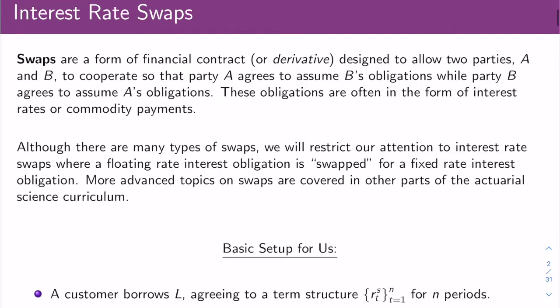First, we're going to wrap up the term structure stuff by talking about interest rate swaps. A swap is a form of a financial contract or derivative designed to allow two parties, A and B, to cooperate so that party A assumes party B's obligations and party B assumes A's obligations. Often these obligations are in the form of interest rate payments or commodity payments — they do this with oil and various kinds of grains. We're going to restrict our attention to interest rate swaps.